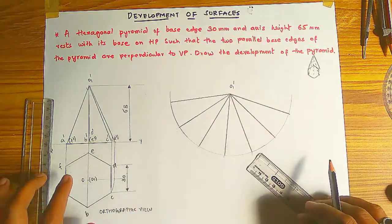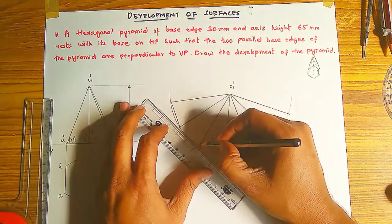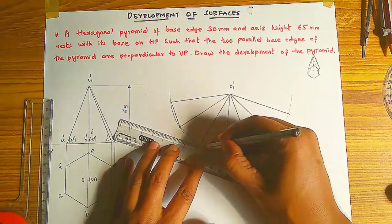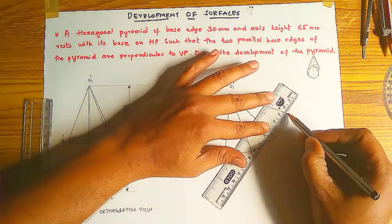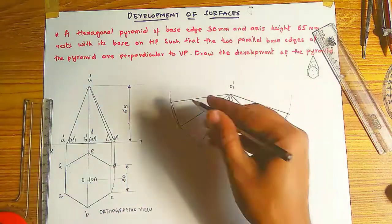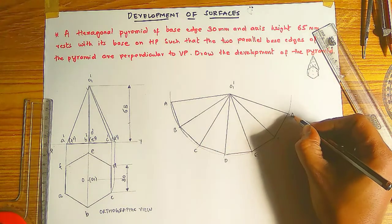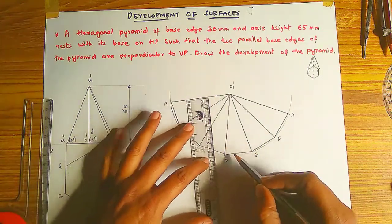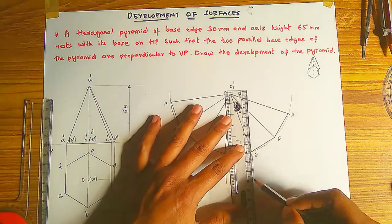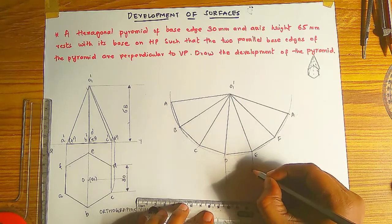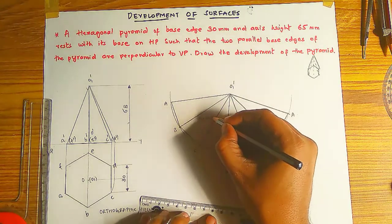Now draw the base edges connecting the arc points to complete the development. Label the points as A, B, C, D, E, F, and one more A to close the development. Draw extension lines perpendicular to the base edges, then dimension lines with arrow marks showing 30mm. This is the complete development of the hexagonal pyramid surface.